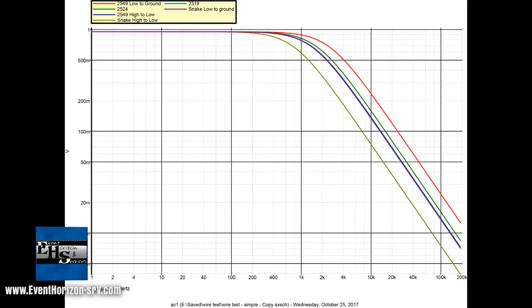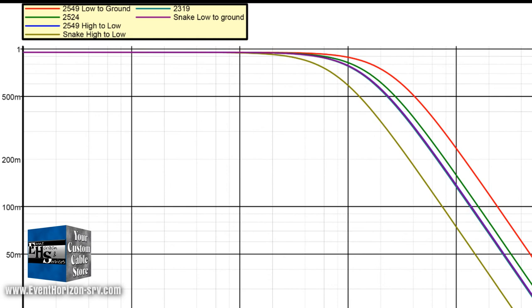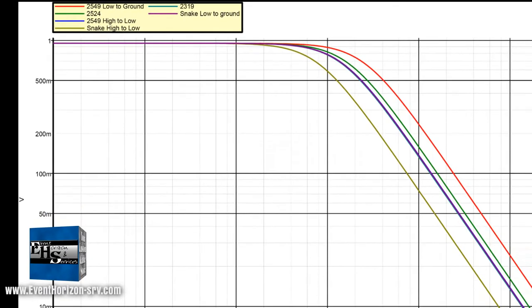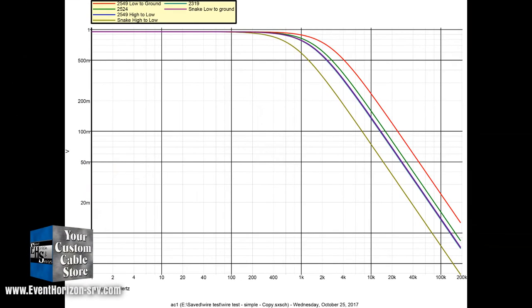The red line is snake with the two conductors tied together and performs the worst. To compare them all in order from best to worst would be 2549 low to ground, then 2524, then all about equal is snake low to ground, 2319, 2549 conductors tied, and the worst would be snake conductors tied.